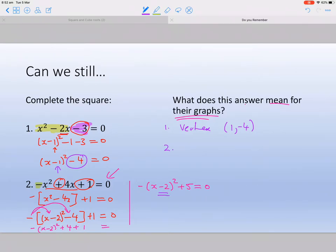So it's going to be the opposite sign of that. So vertex, it's going to be 2 and then you're going to keep that sign there. So that's 5.